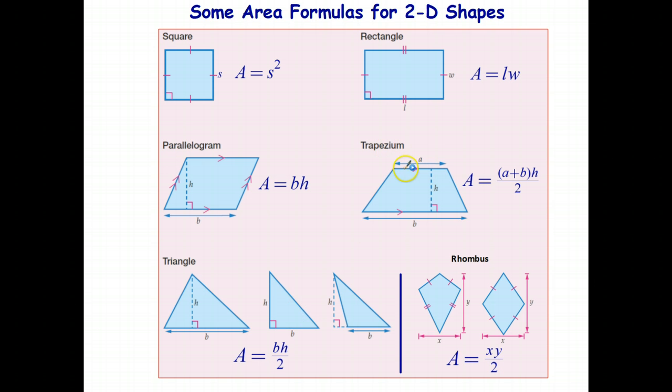The trapezium, also known as a trapezoid in some parts of the world, is a bit different. It's sort of like base times height, but I can't use that base because it's too short. I can't use that base because it's too long. But if I average the two by adding them together and dividing by two, the average base times height gives me the area.